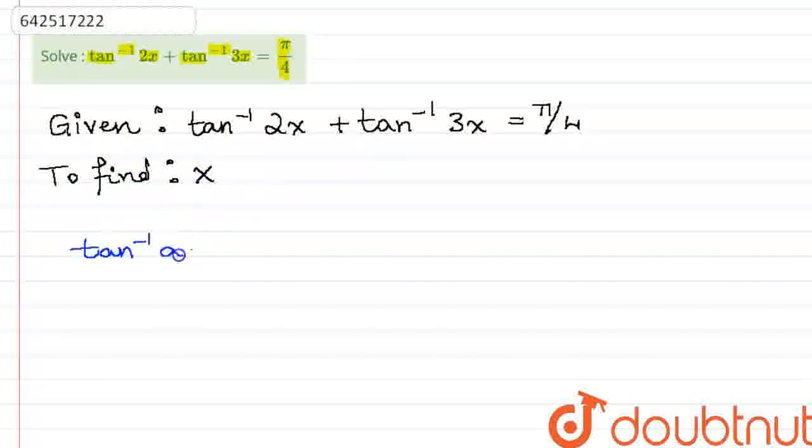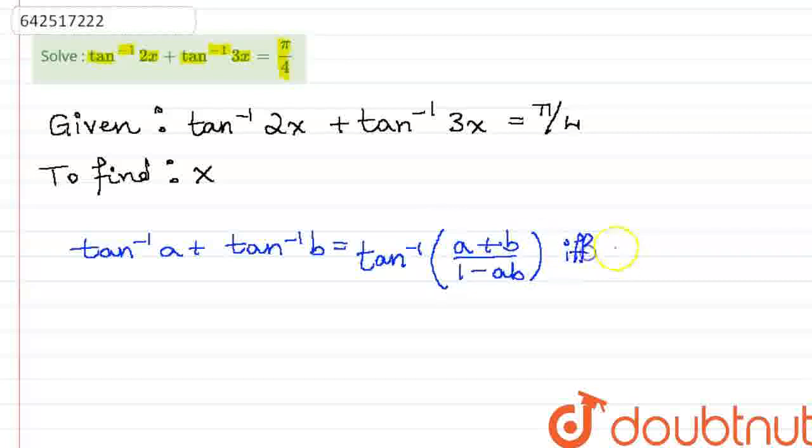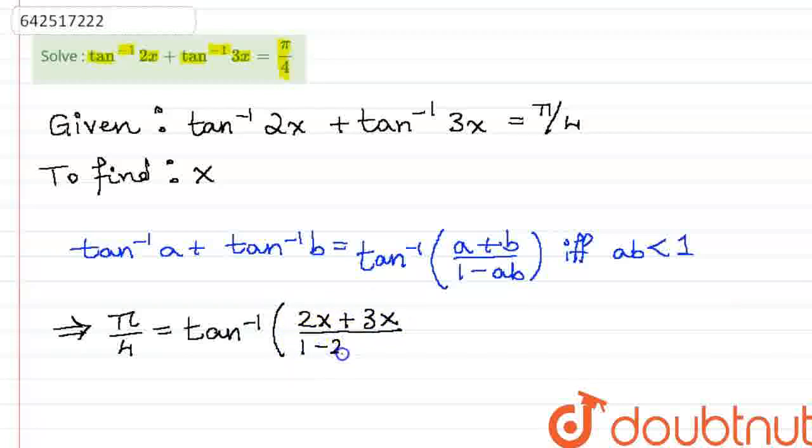Now, there is a well-known formula. The tan inverse of a plus tan inverse of b is equal to tan inverse of a plus b by 1 minus ab if and only if ab is lesser than 1. Which means that we have to hold this under that condition. So, pi by 4 will become the tan inverse of 2x plus 3x by 1 minus 2x into 3x under the above condition.